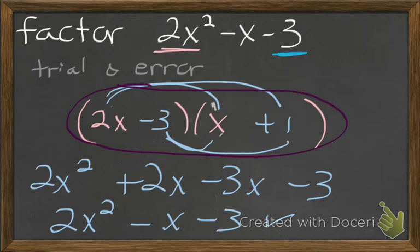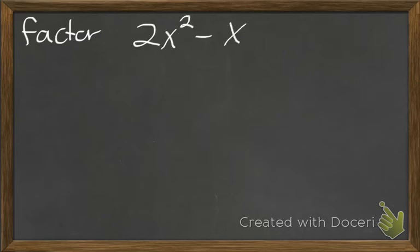We can go ahead and solve this exact same problem a different method. So let's go ahead and do that. I'm going to rewrite this on a different page. Still going to be factor 2x squared minus x minus 3.